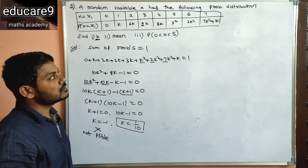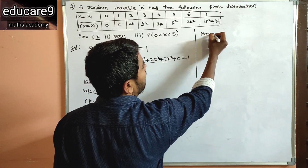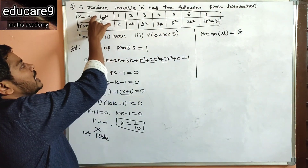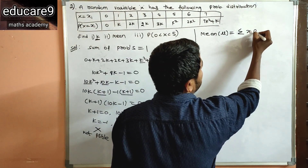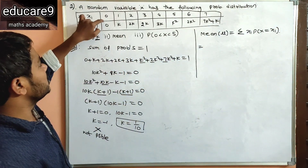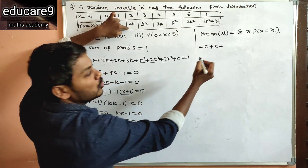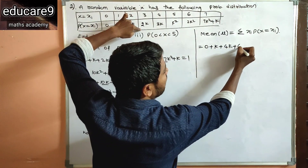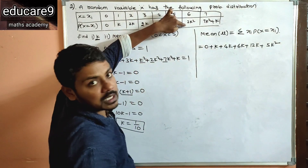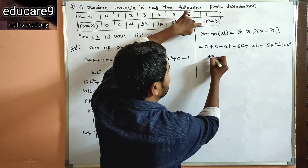Next, find the mean. Mean = Σ xᵢ × P(X = xᵢ). Computing: 0×0 + 1×K + 2×2K + 3×2K + 4×3K + 5×K² + 6×2K² + 7×7K². This gives K terms: 1 + 4 + 6 + 12 = 23, wait — combining: K terms sum to 30K, and K² terms: 5 + 12 + 49K² = 66K². Mean = 66K² + 30K.